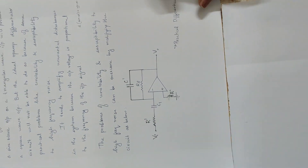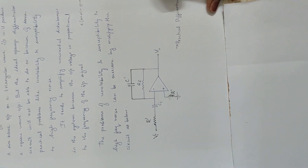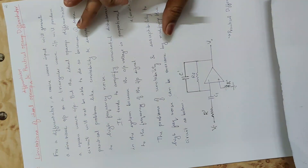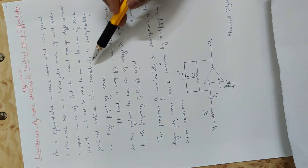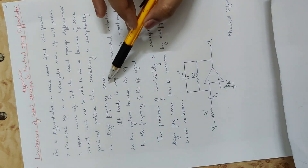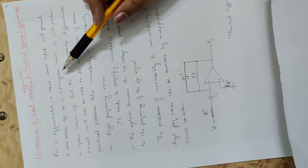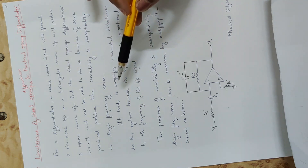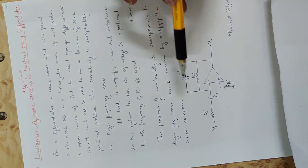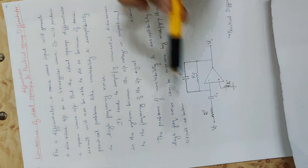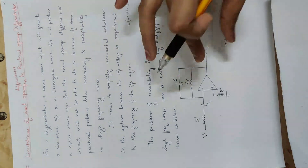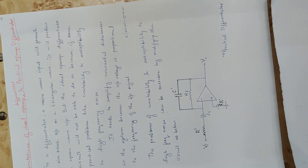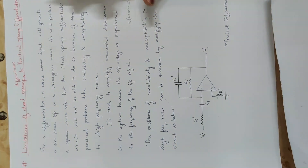This is the practical differentiator. The limitation of the ideal differentiator is instability and susceptibility to high-frequency noise — that is, the output waveform is not correct and noise will be amplified. In this case, we have a capacitor and a resistor in series. This is the practical differentiator circuit, which is the operating circuit we need to use.